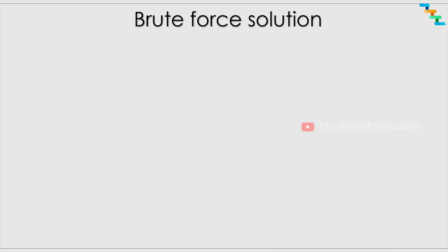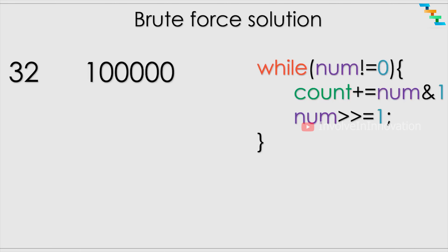First we will start with the brute force solution. The brute force solution is very simple: we check whether the number is not zero, then AND the given number with 1 — that is, we are checking the last bit in the given number, whether it is set to zero or one. We then add this value to the count and right shift the given number by one.